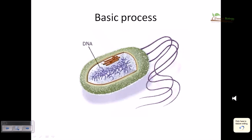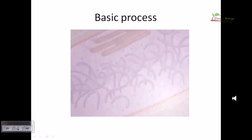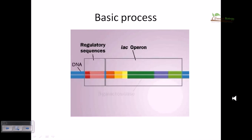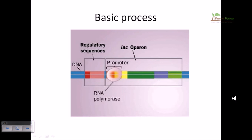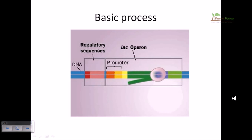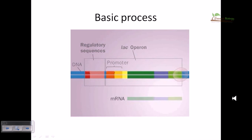The lac operon is a bacterial system for regulating genes that control the utilization of lactose, a disaccharide. The operon controls expression of genes for beta-galactosidase, which splits the disaccharide; permease, which transports lactose into the cell; and transacetylase. These structural genes are transcribed when RNA polymerase can bind the promoter. When there is no lactose in the cell's environment, it would be wasteful to make these proteins, so the cell keeps the RNA polymerase binding site turned off.